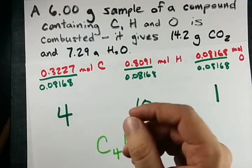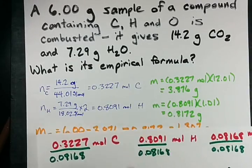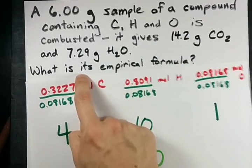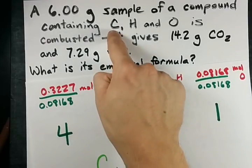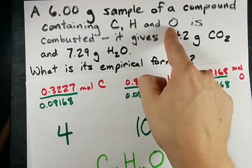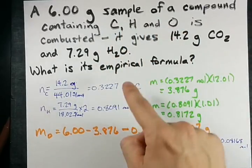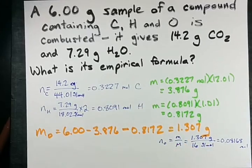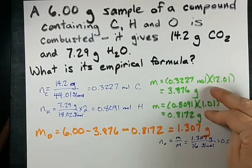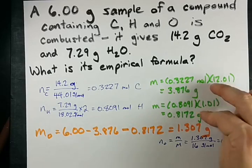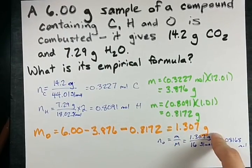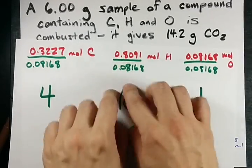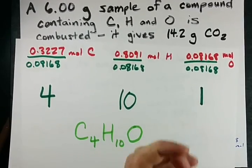But yeah, so that's how you find the empirical formula when you're only given the mass of carbon dioxide and water in the combustion of a compound that contains carbon, hydrogen, and oxygen. You find the number of moles of carbon and hydrogen like before, find the masses that they account for, and the remaining mass is the mass of oxygen. That gives you your last number of moles and you can figure out the empirical formula from there.